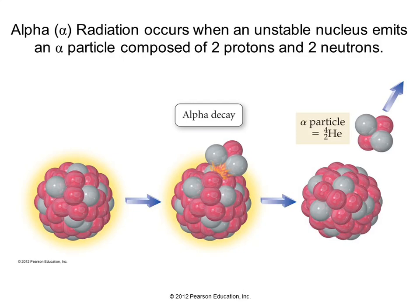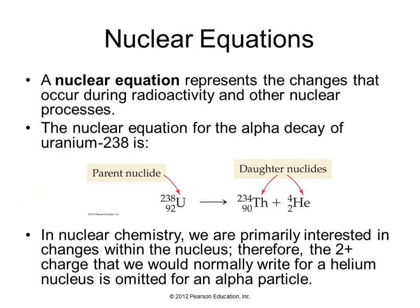So alpha radiation occurs when you have an unstable nucleus that shoots out an alpha particle. What's an alpha particle? An alpha particle is actually a helium nucleus. So this is the symbol for the alpha particle. It's a helium nucleus. It's got a mass number of four, because it's got two protons and two neutrons. So we've got this larger nucleus, and it's unstable. We don't go into why in this class. And it shoots out this particle. And now what's left has two fewer protons and two fewer neutrons.